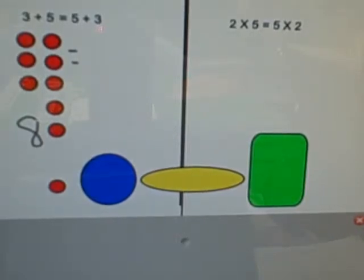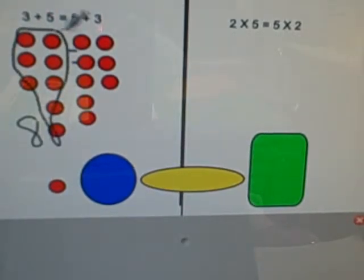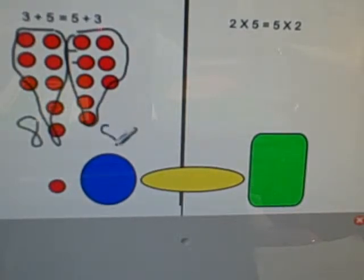Okay, now let's try 5 plus 3. 1, 2, 3, 4, 5, and 1, 2, 3. Even visually you can see this 3 plus 5 right here is the same as the 5 plus 3. So the answer is 8 equals 8.